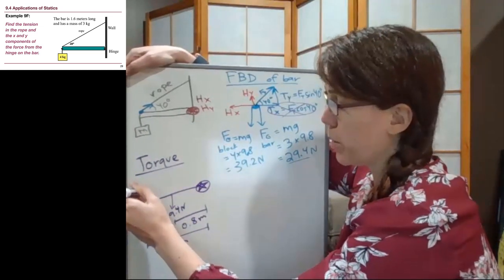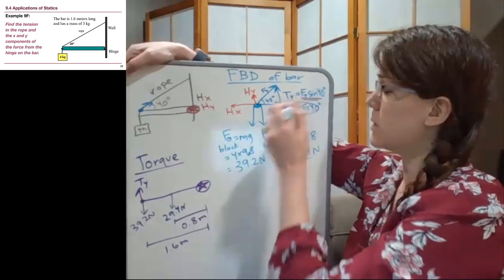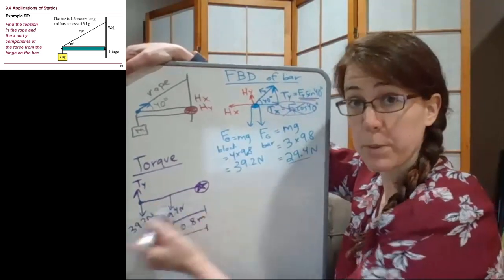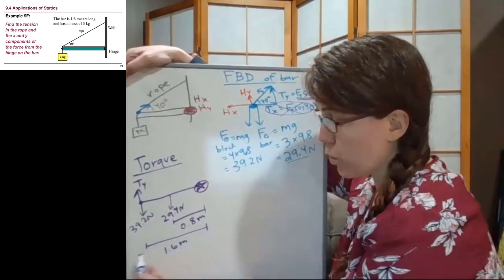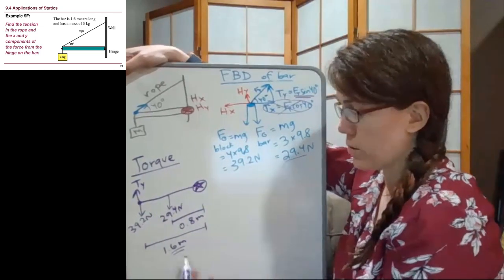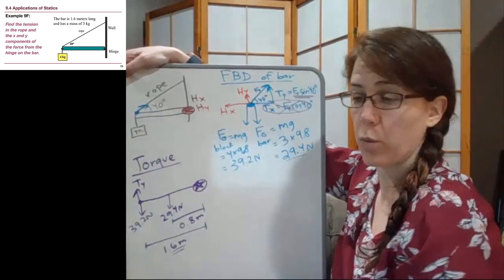The y component, so I am going to write t subscript y, just this piece, that is perpendicular distance away from the axis. It is also 1.6 meters, so that one is going to be used twice. It is also 1.6 meters away from where the hinge is.